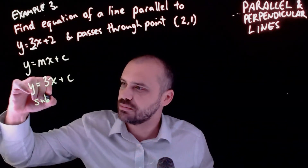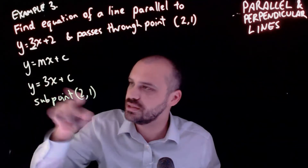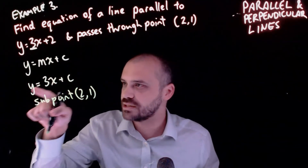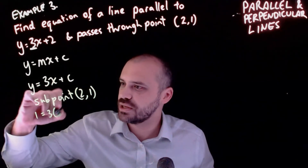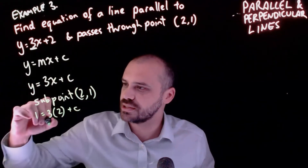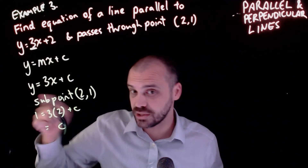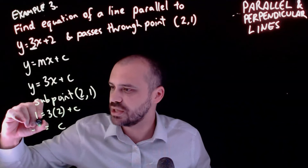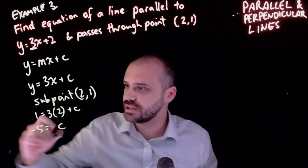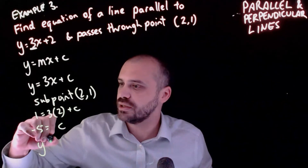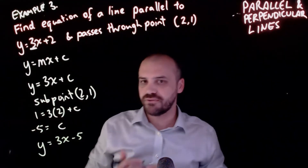We can substitute point (2, 1) into the equation for x and y - 2 is x and 1 is y. So 1 equals 3 times 2 plus c. c equals 1 minus 6, which is negative 5. So c is negative 5, and therefore the final answer is y equals 3x minus 5.